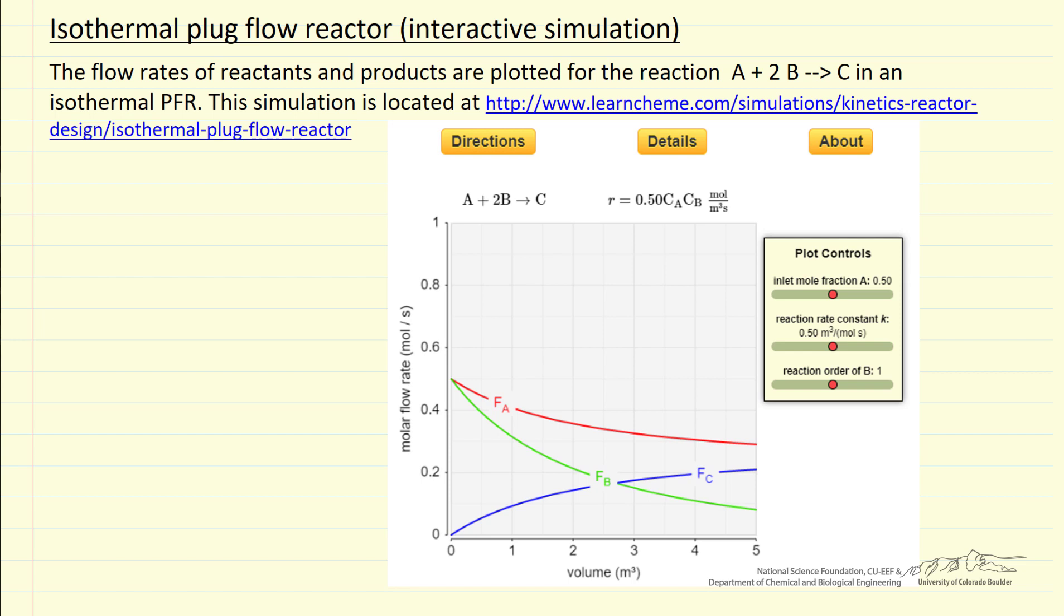What we're able to change is the mole fraction of A in the feed, so it can be stoichiometric or non-stoichiometric, the rate constant for the reaction, and then the reaction order of B.